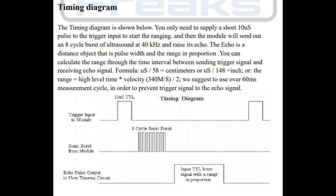The formula is microseconds divided by 58 for centimeters results, or microseconds divided by 148 for inch result. Or, the range equals high level time multiplied by velocity of sound divided by 2.